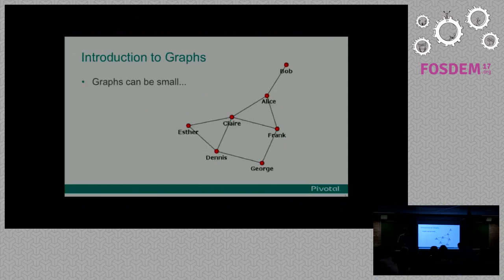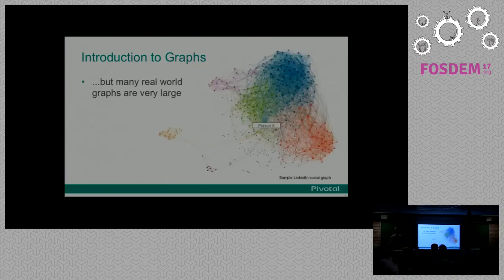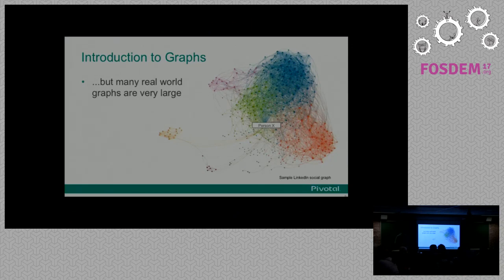Graphs represent entities and their relationships and can help us understand connections. They can be very small and simple, like a group of friends. However, most real-world graph problems are actually very large. This is an example of a visualization from LinkedIn showing connections for a particular person. But these kinds of graphs exist in computer networks, social networks, the internet, and transportation networks. So the question is: can we have a computing platform that can reason over these large graphs efficiently and do analytical operations at scale?